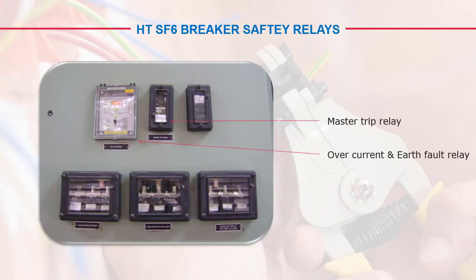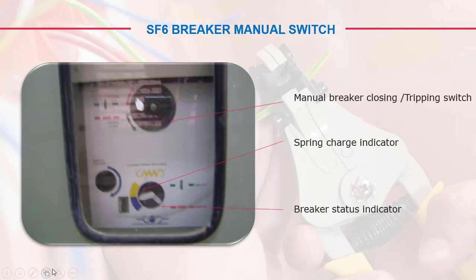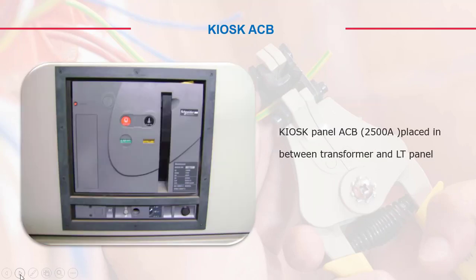What are the safety relays? You can see here the master trip relay, overcurrent relay, and earth fault relay. There are also auxiliary relays available. The SF6 breaker has a manual switch, a manual breaker closing and trip switch, a spring charge indicator, a breaker status indicator, and an ACB — Air Circuit Breaker.